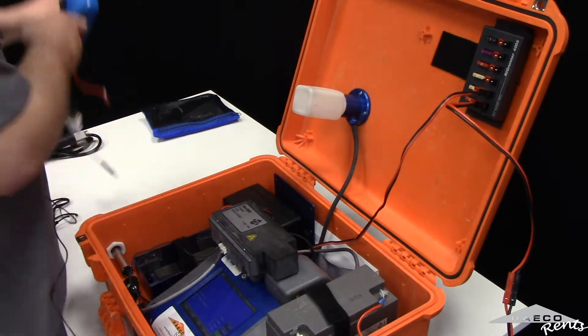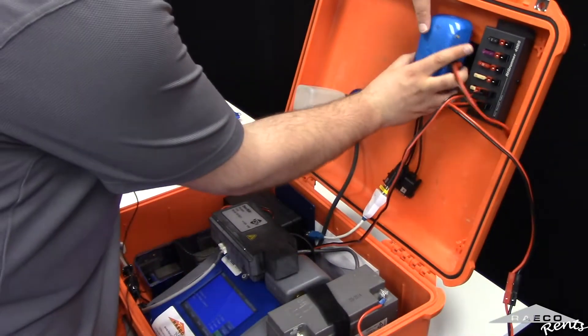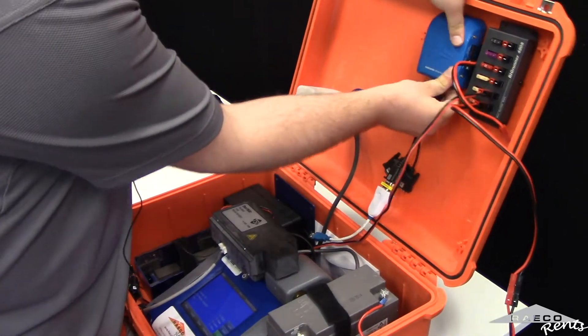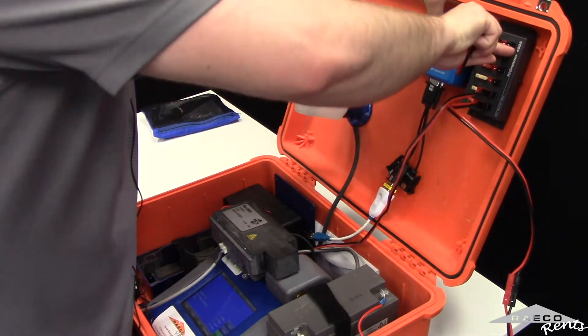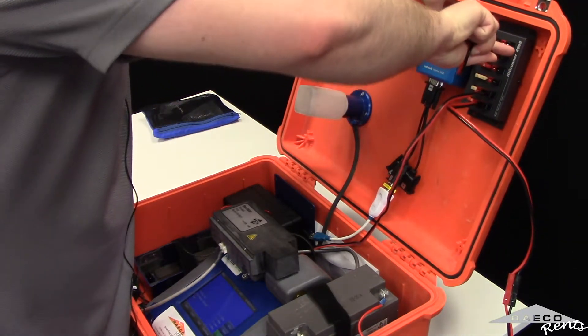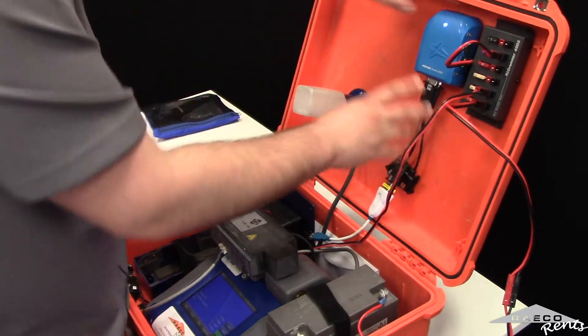The last optional accessory that we'll show you today is the Themis. This will be velcroed here and plugged in here on the rig runner. Notice it turns on. It's a solid blue light. This means it's on and running.